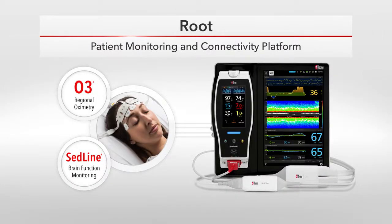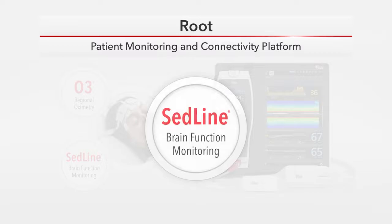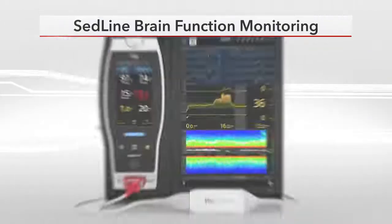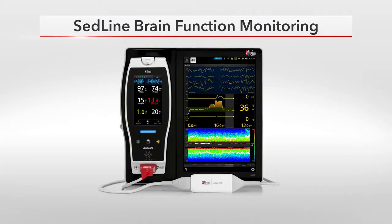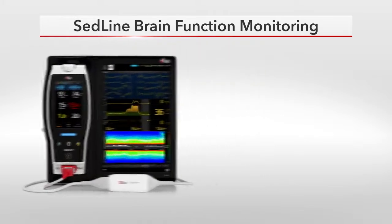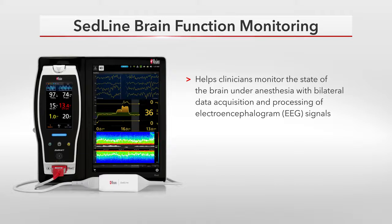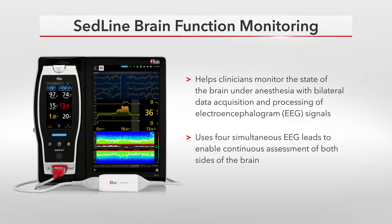SED-Line Brain Function Monitoring is also available as a Mach 9 module on Root. The SED-Line system is comprised of four components: Root, the SED-Line Mach 9 module, the SED-Line patient cable, and the SED-Line sensor. SED-Line helps clinicians monitor the state of the brain under anesthesia with bilateral data acquisition and processing of EEG signals, using four simultaneous EEG leads to enable continuous assessment of both sides of the brain.